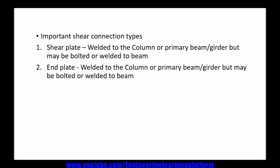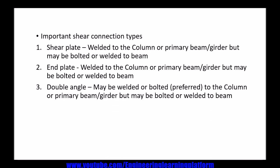End plate connection is also a type of shear connection in which the plate is welded to the column or the primary beam but may be bolted or welded to the connecting beam. Double angle connection consists of two angles welded or bolted to the connecting beam web and welded or bolted to the primary column or beam.